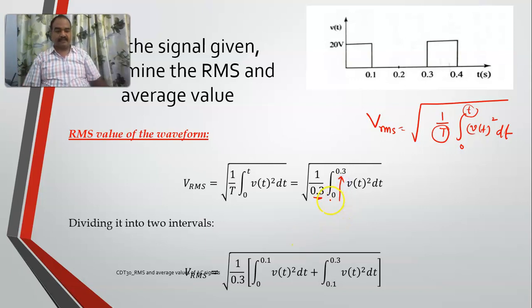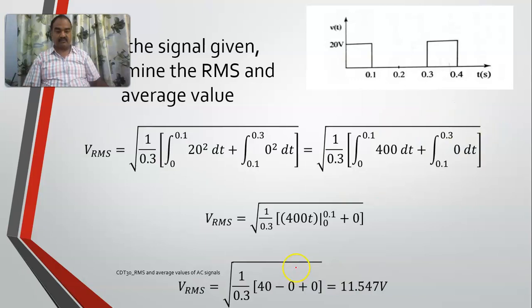And again, I am dividing this one into two parts, 0 to 0.1 and 0.1 to 0.3. And here V of t is 20 here again and here it is 0. So when I write it here, 20 square I should write. So 20 square is 400. It is 20 square, so I am writing it as 400 here and this is 0, same. So this can be eliminated, because 0 I will not get any integral.